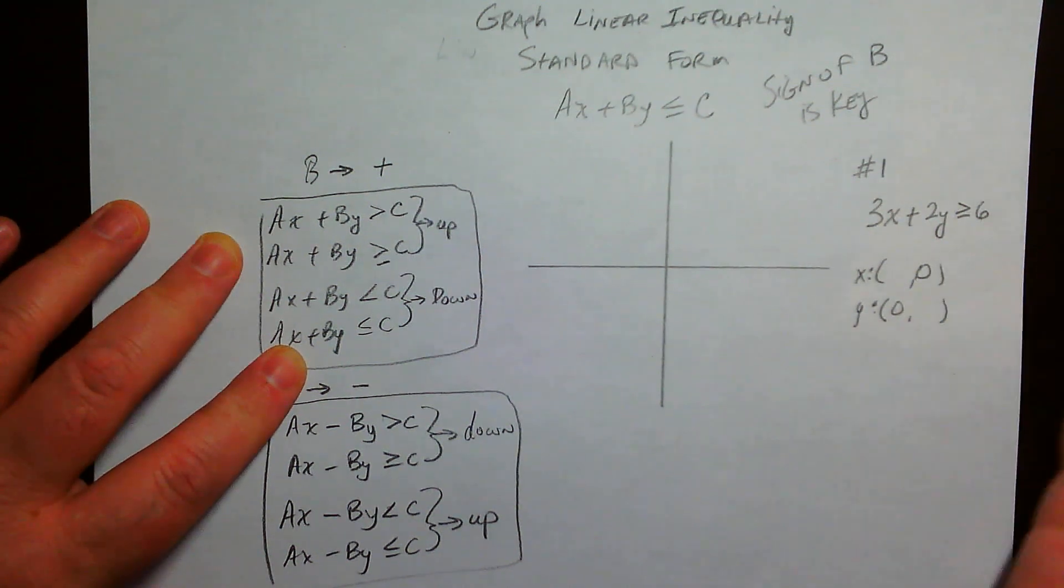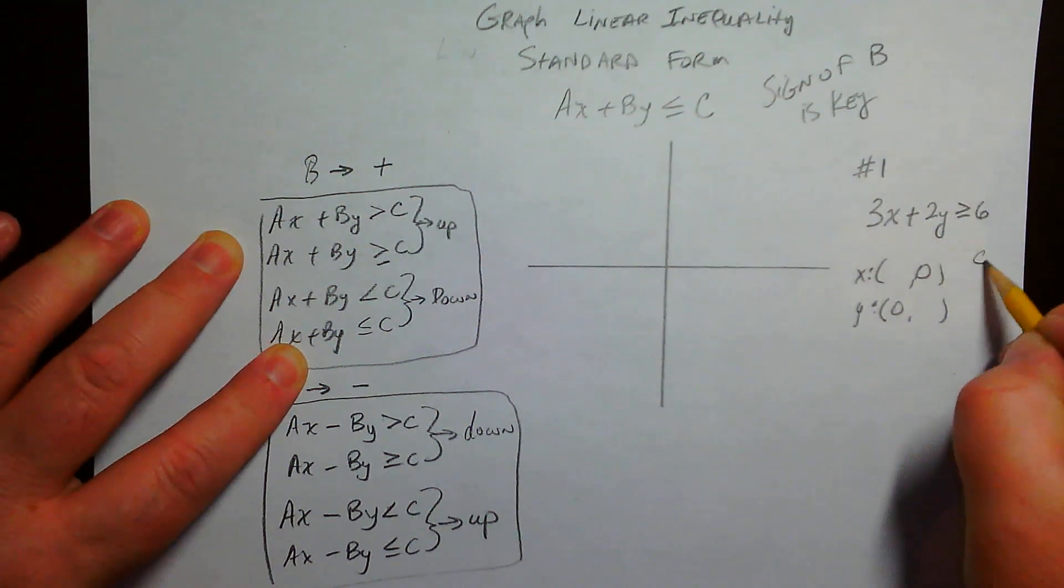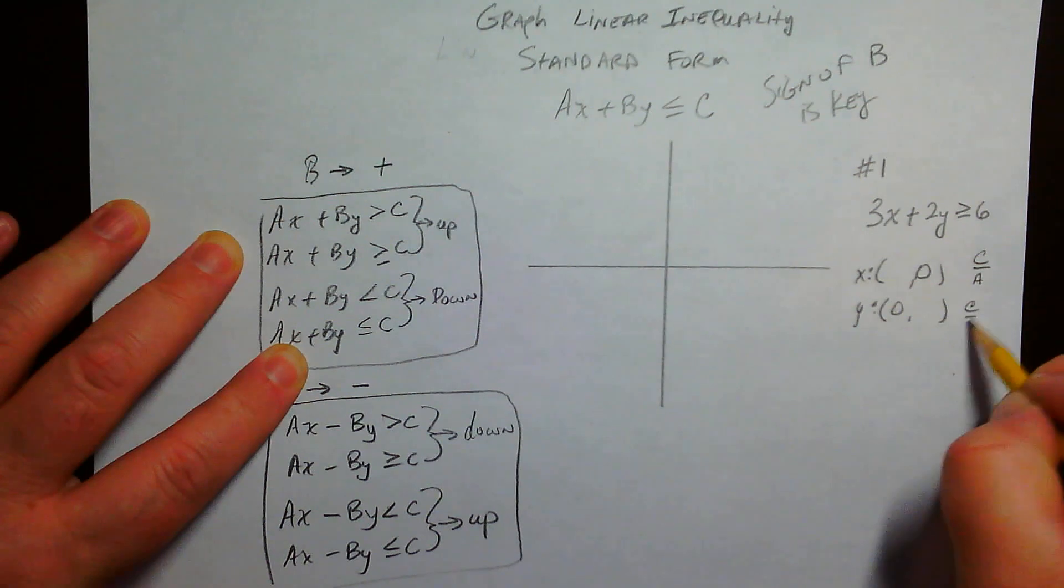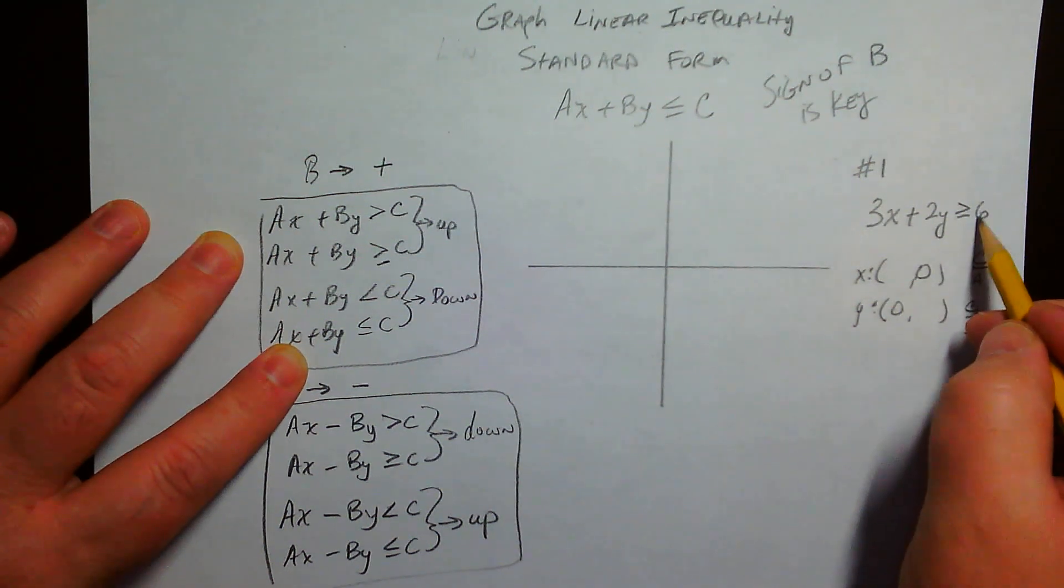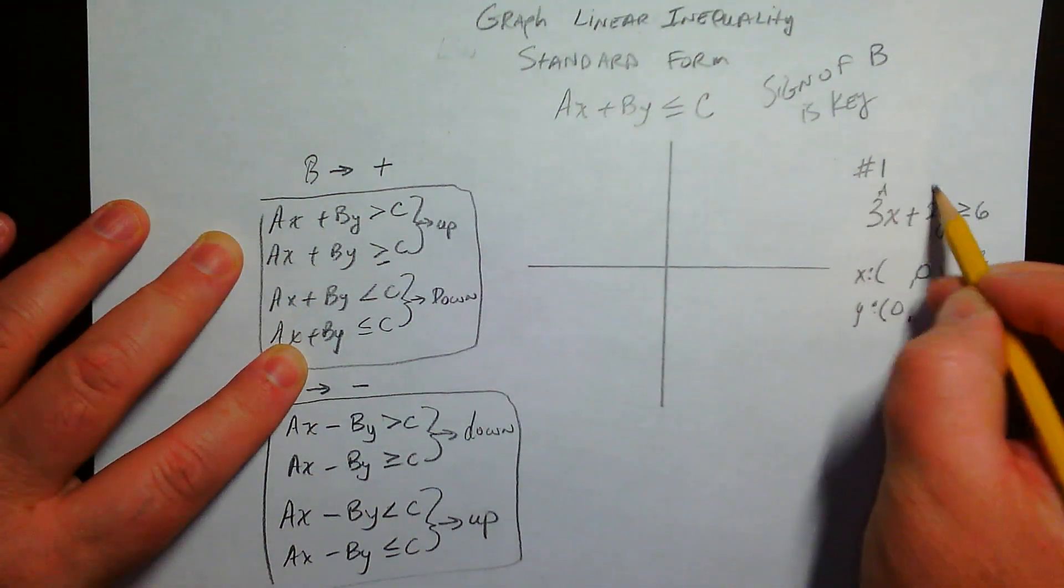So another way you could think about it is x is c over a, and c over b is the y-intercept. So that's c, that's a, that's b. A, b, c.